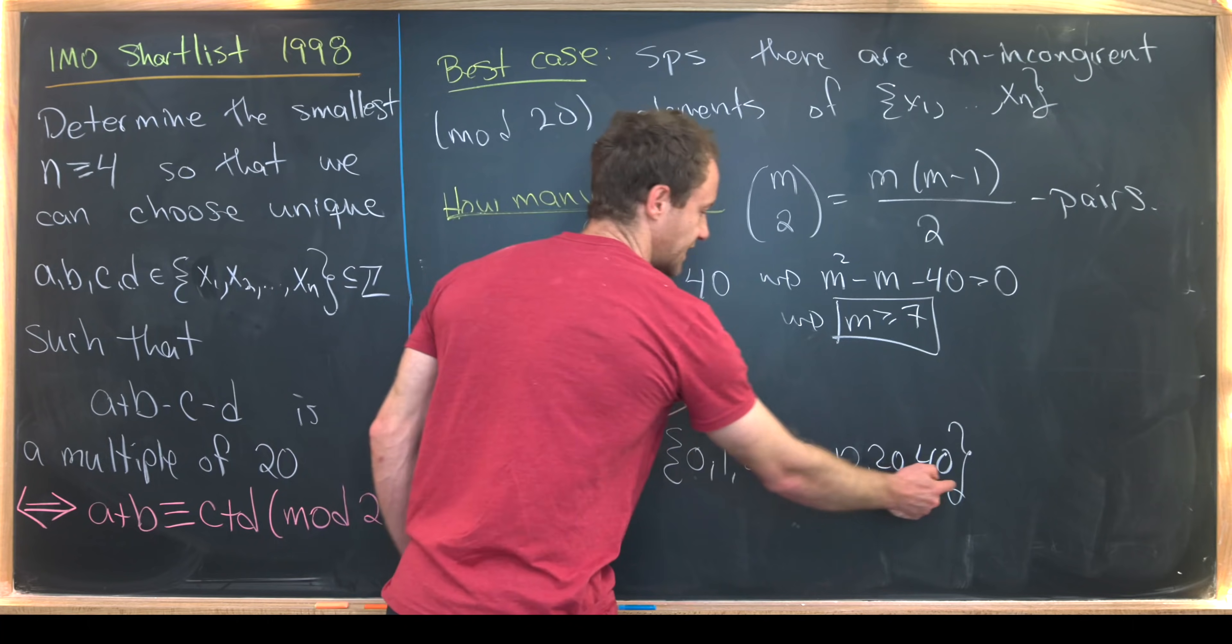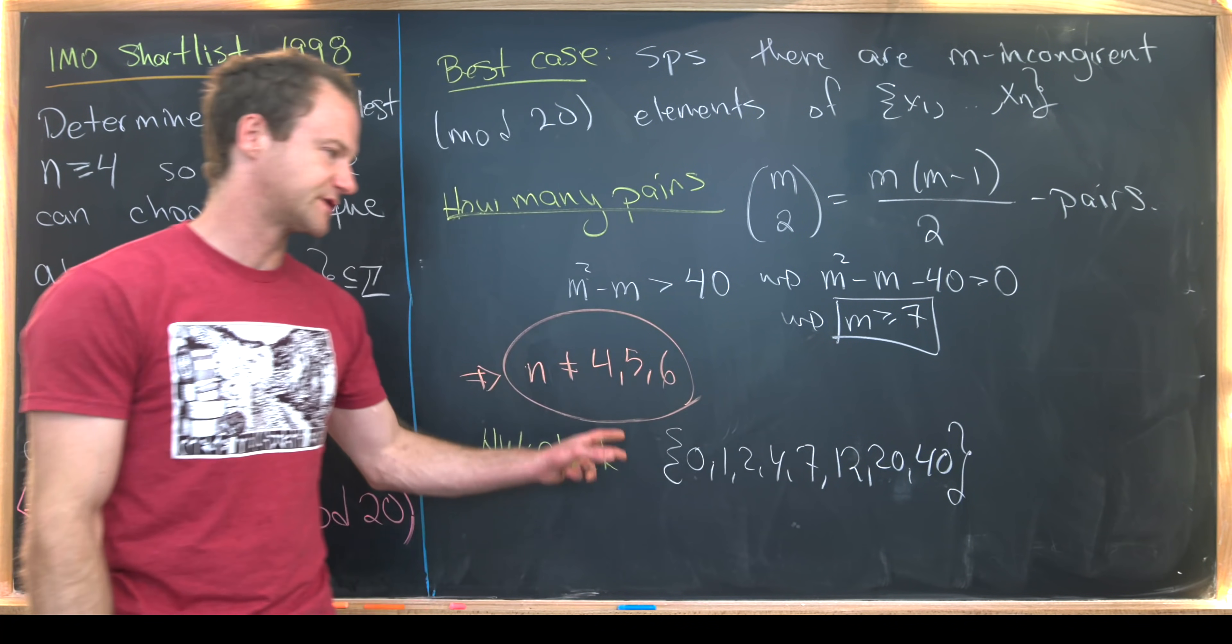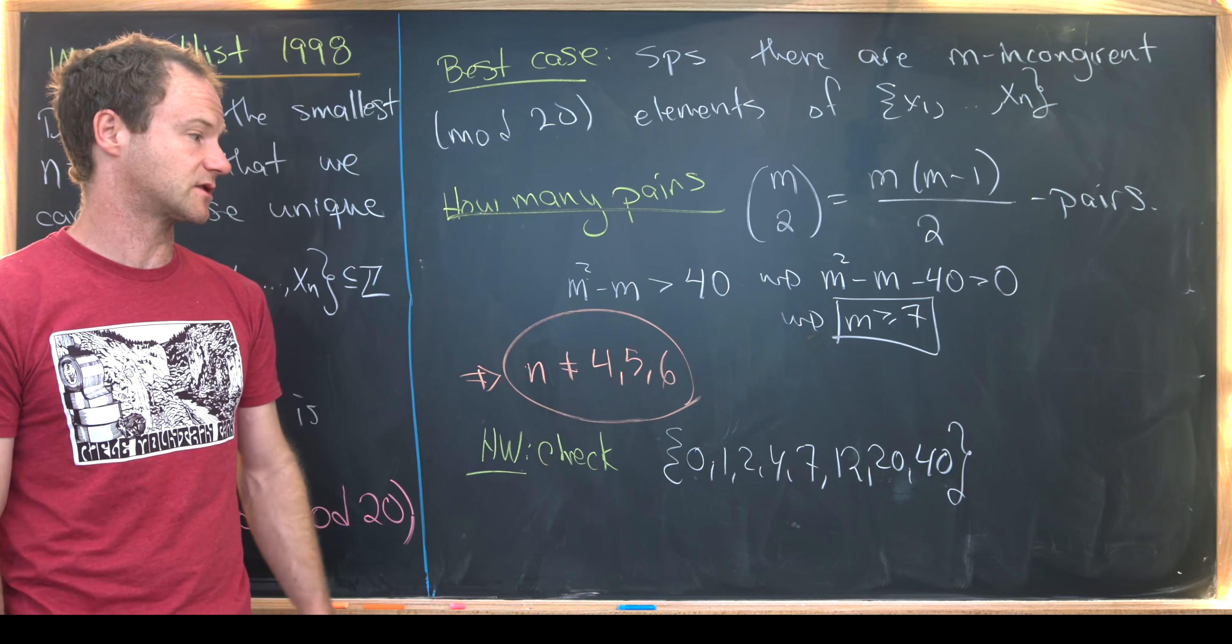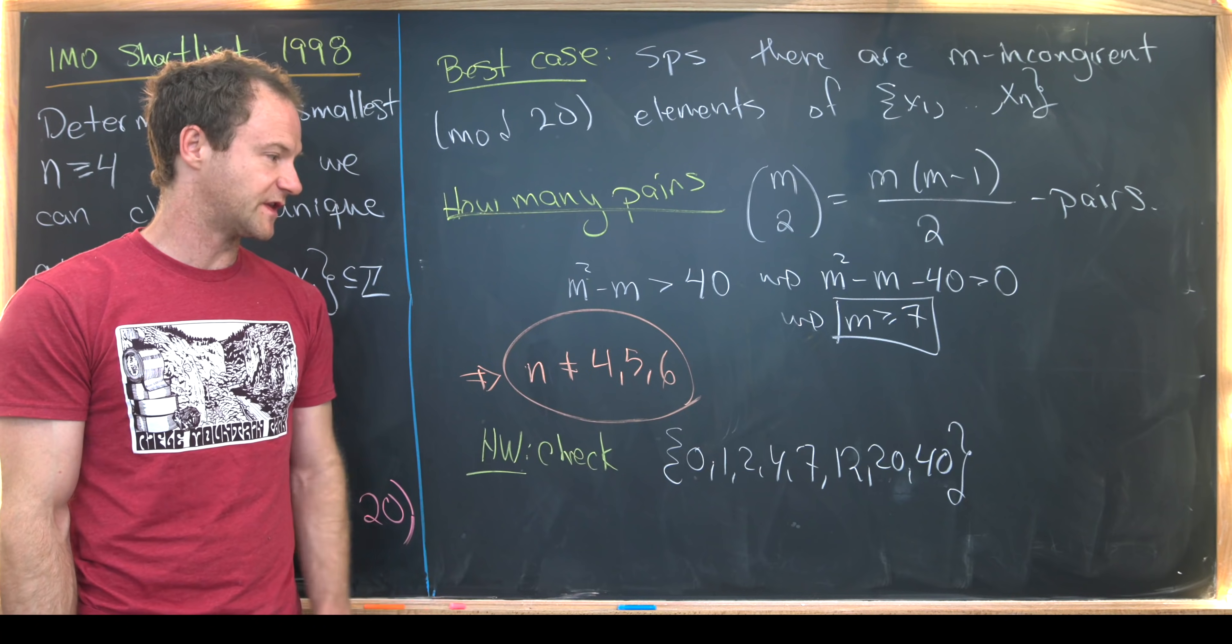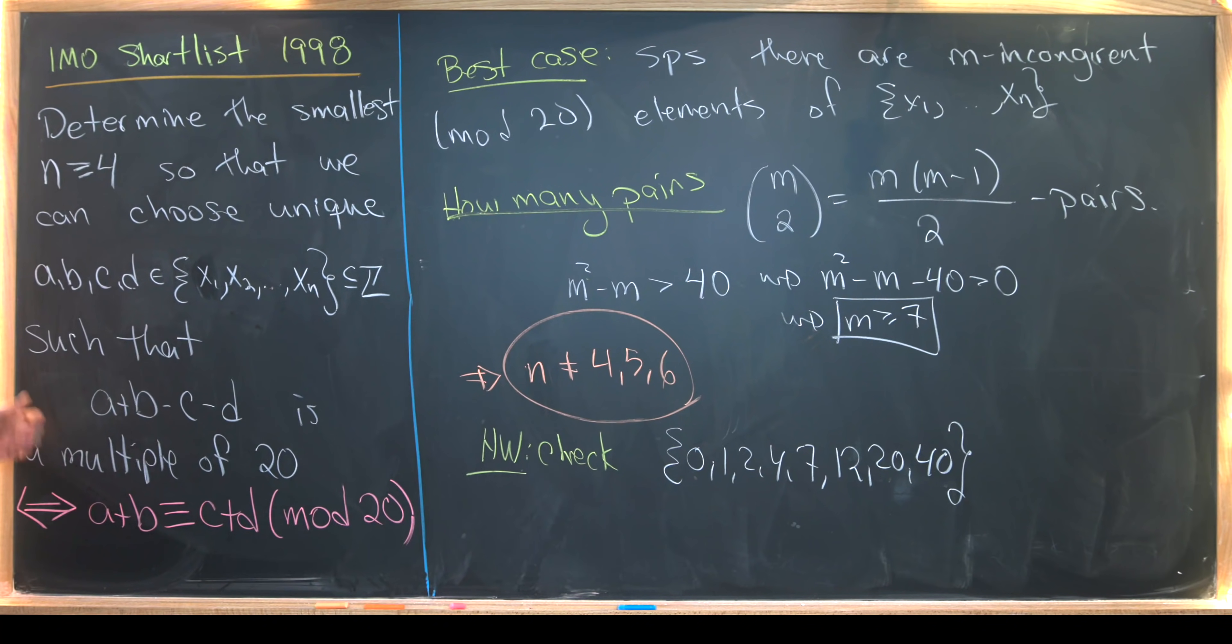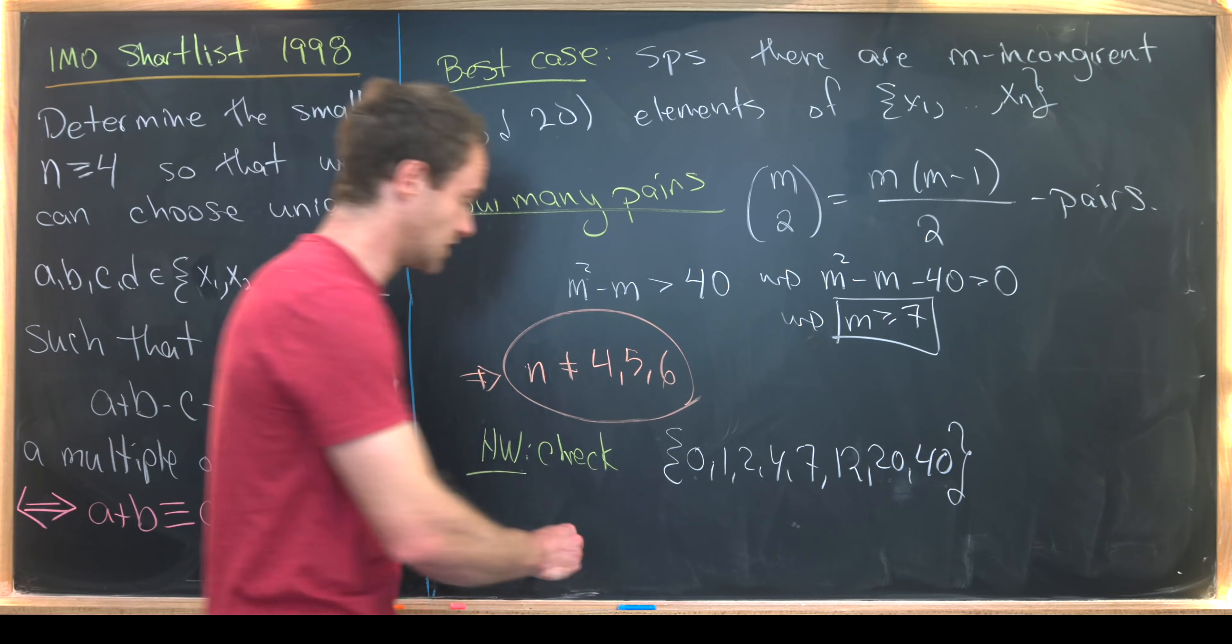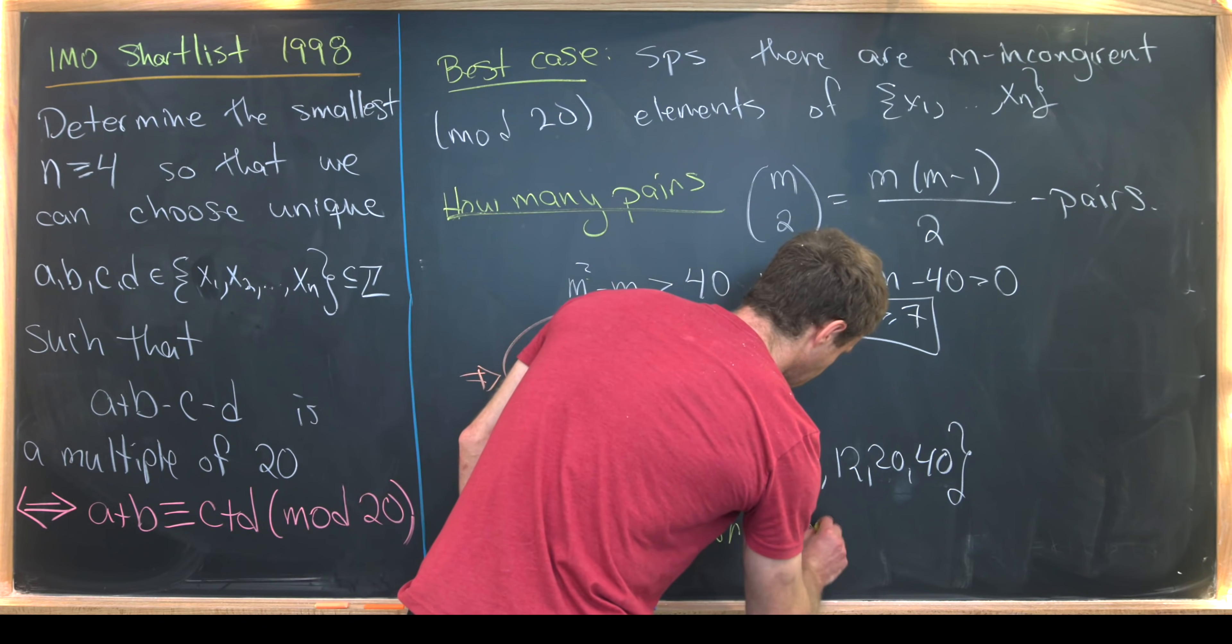So 0, 20, and 40 are all congruent mod 20, but these are all incongruent. So there are exactly six congruence classes exhibited in this set. And playing around with that you can see that every quadruple of elements chosen from this set does not satisfy this rule. So I'll just put here that this doesn't work.